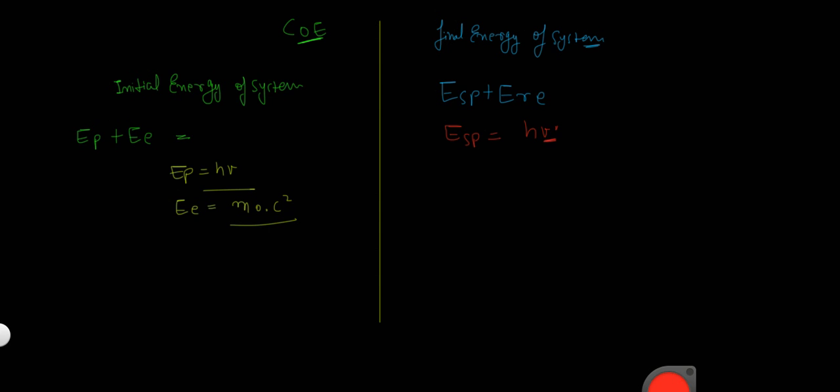Now, when I write nu dash, I mean that the frequency of scattered photon is different from the frequency of incident photon.